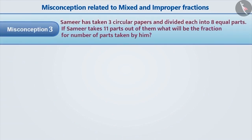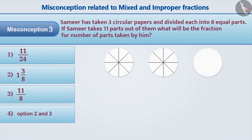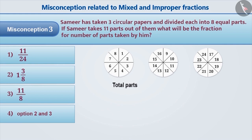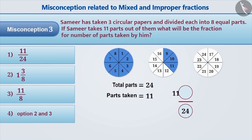Misconception 3. Samir has taken 3 circular papers and divided each into 8 equal parts. If Samir takes 11 parts out of them, what will be the fraction for the number of parts taken by him? Since Samir divides each circular paper into 8 equal parts, it is assumed that the total parts are 24. Since the total number of parts is written as the denominator, 24 is taken as denominator, and since the number of parts taken are 11, that is considered the numerator. Therefore, the fraction is 11/24.